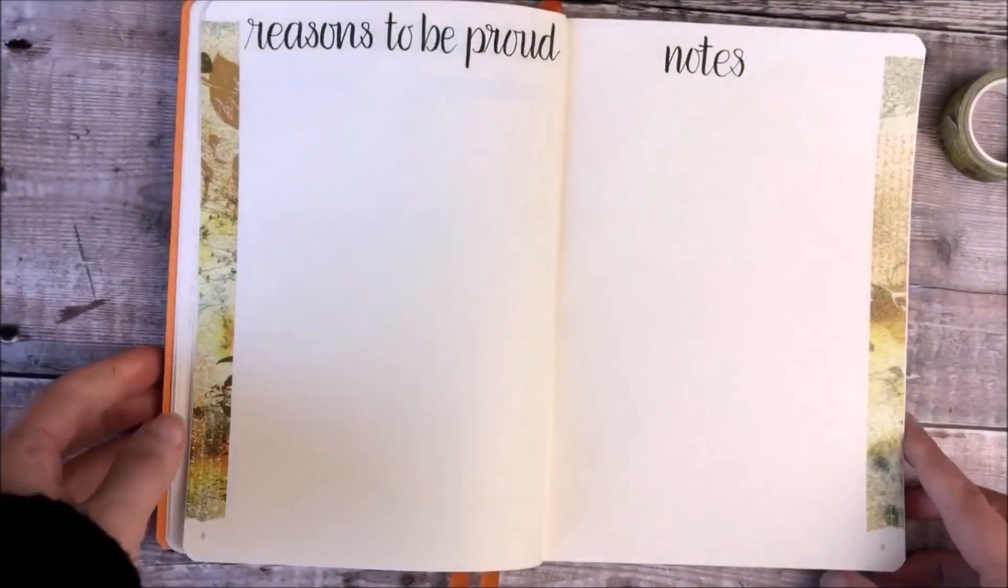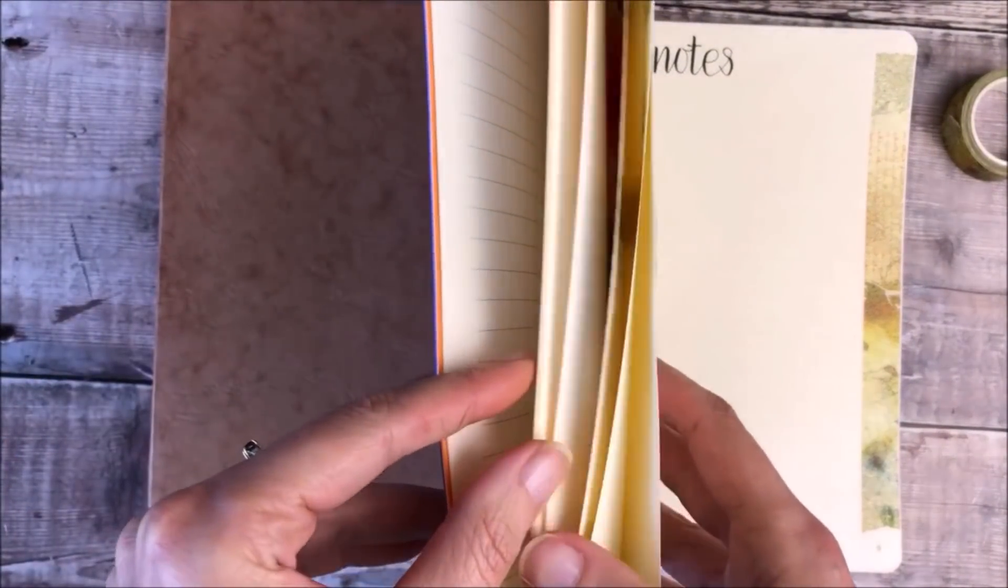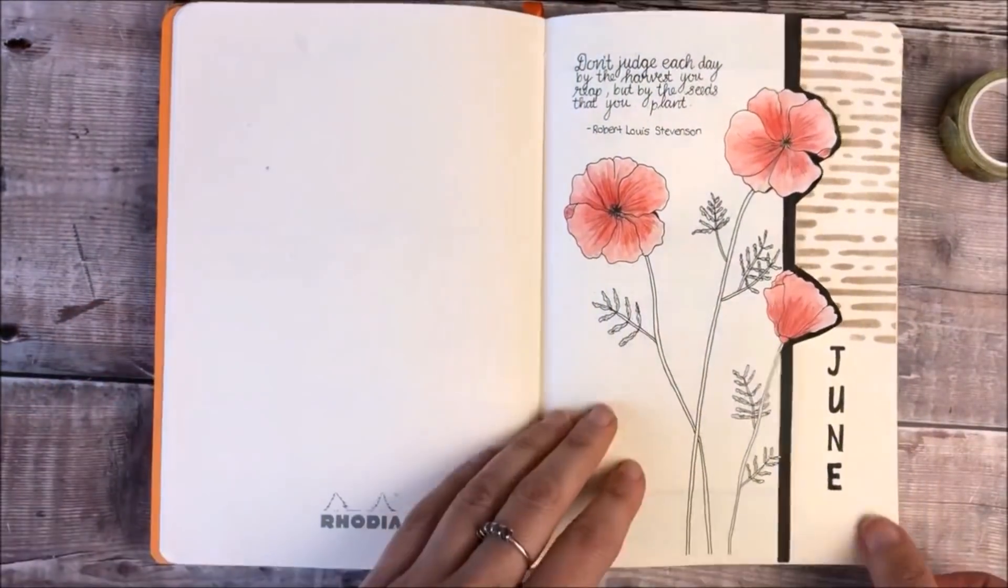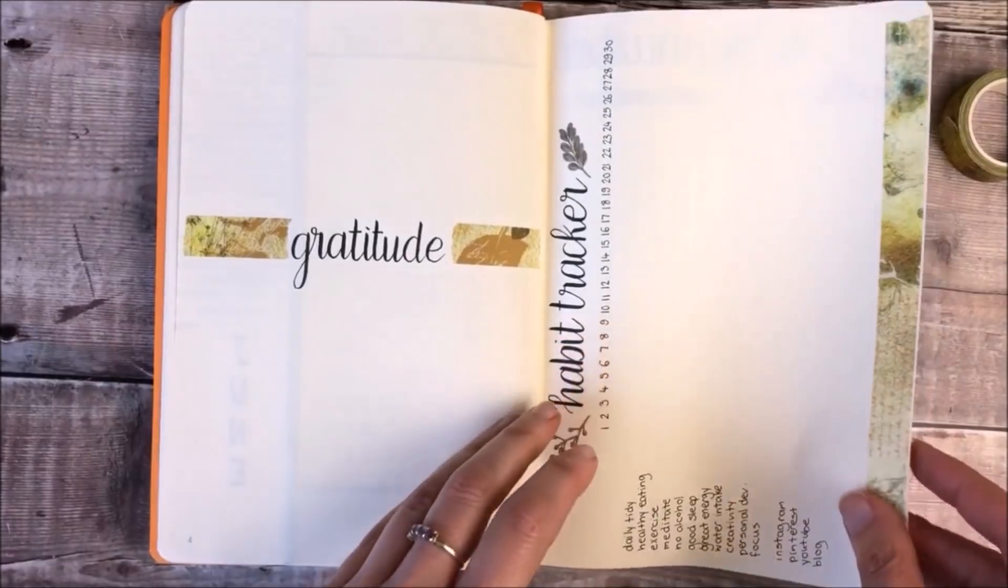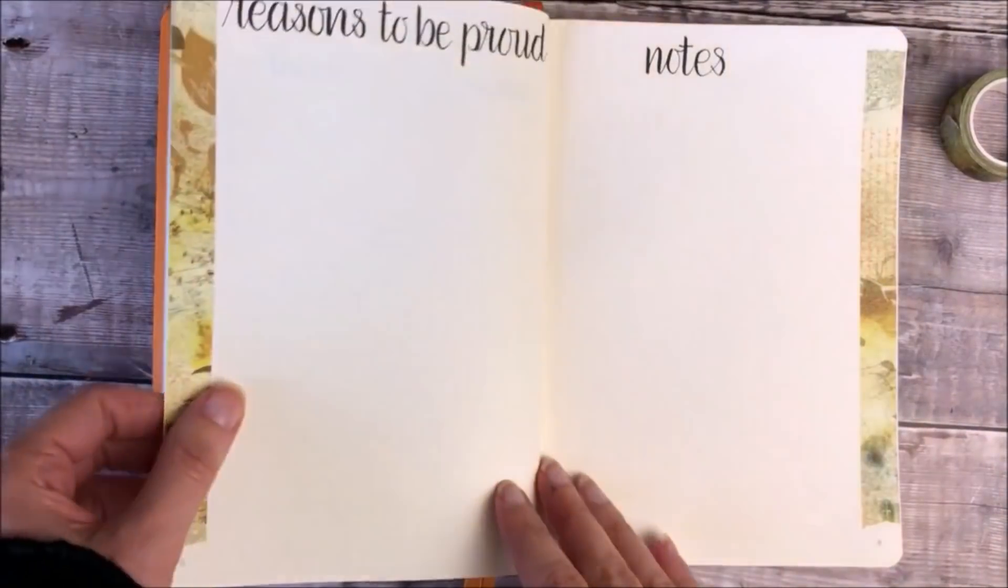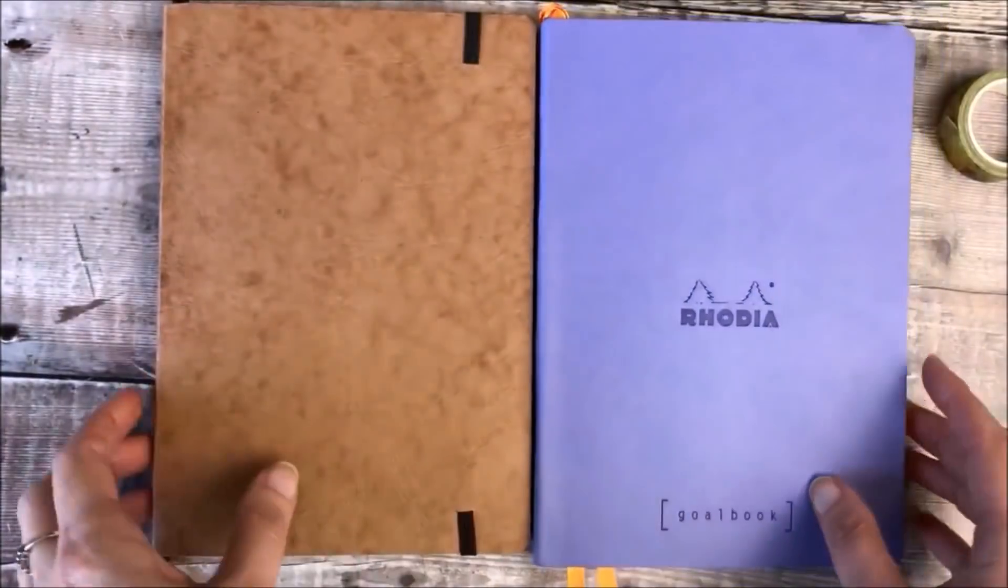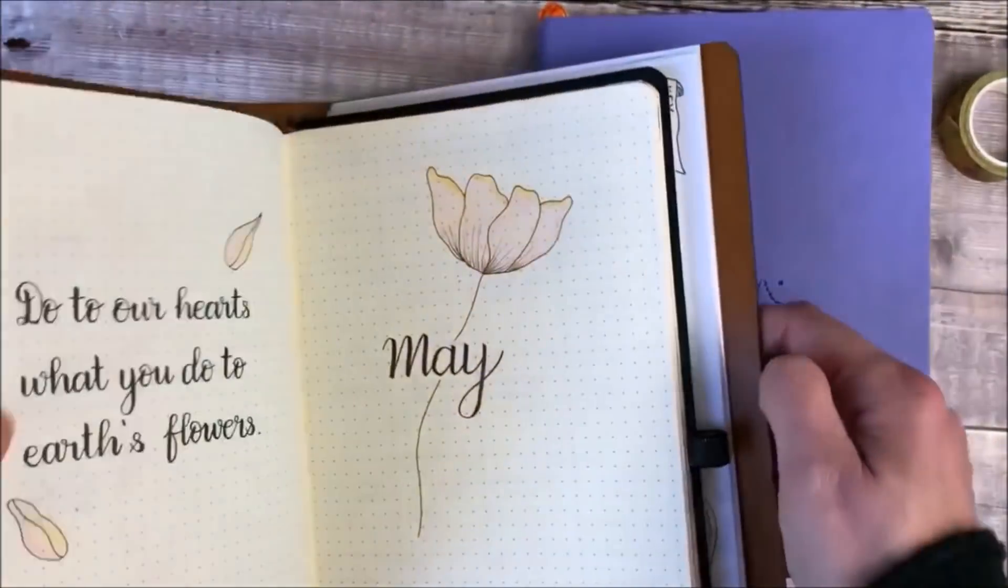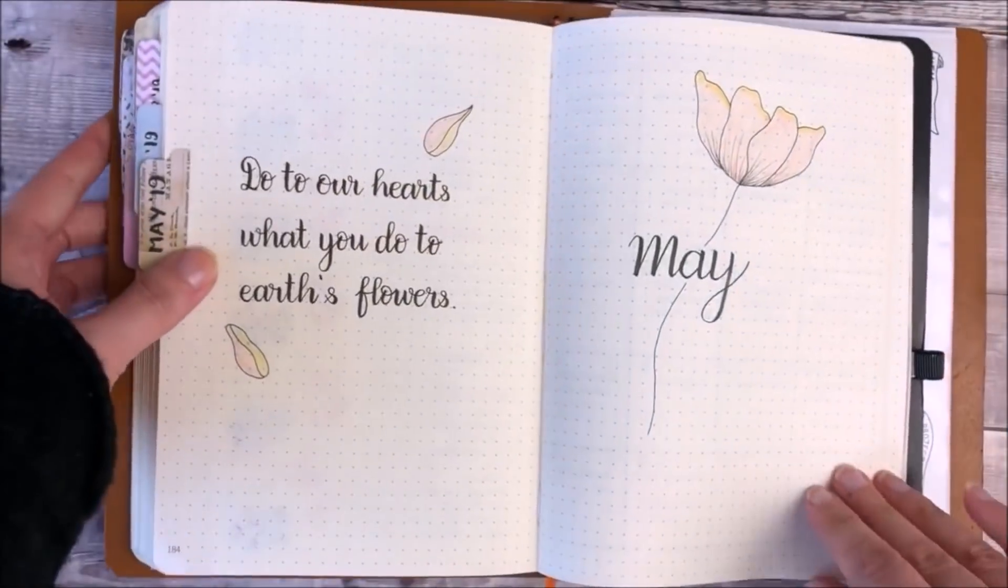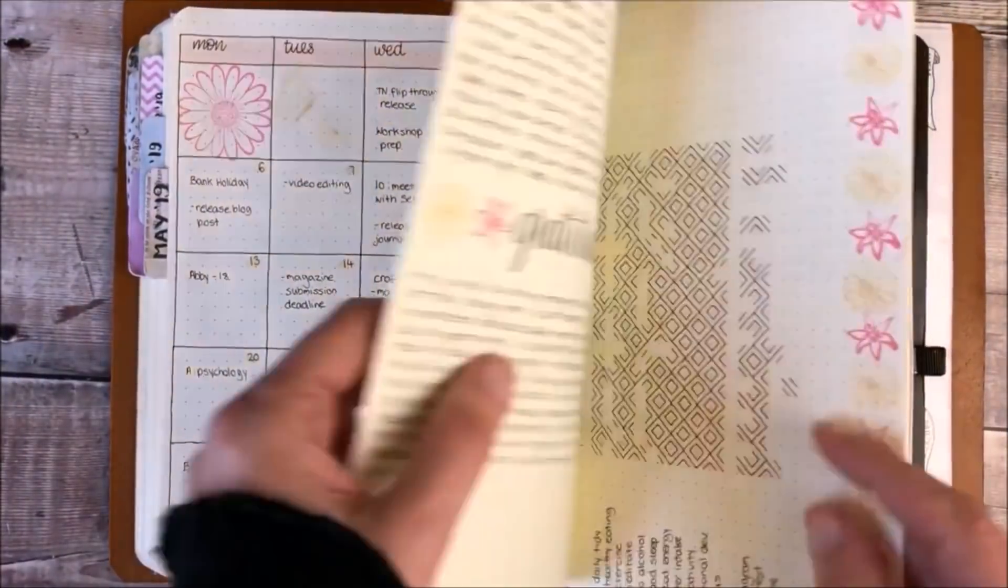I'll now share a quick flip through of my pages that I've created for my June setup. Once I get closer to the time I will then set up my weekly and daily plans. This is how my current bullet journal is looking in May, and I will definitely film a full flip through once I've completed this journal.